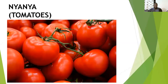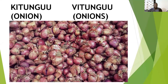Then there is nyanya — tomatoes. The same word nyanya is used in both singular and plural. Then there is kitungu — onion. In plural is vitungu — onions. We also call them kitungu maji or vitungu maji.